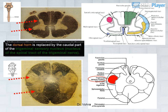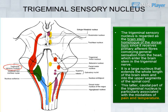The nucleus of the spinal tract of the trigeminal nerve — the trigeminal sensory nucleus — is regarded as the brainstem homologue of the dorsal horn, since it receives primary afferent fibers conveying general sensation from the head, which enter the brainstem in the trigeminal nerve. It is a large nucleus that extends the whole length of the brainstem and into the upper segments of the spinal cord.